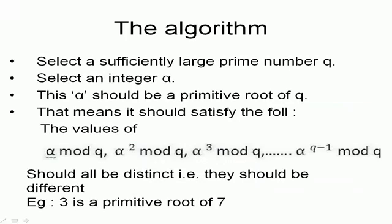Now, let's go to the algorithm. Michael and Stuart will select a sufficiently large prime number Q, then select an integer alpha. These numbers, alpha and Q, they are made public.